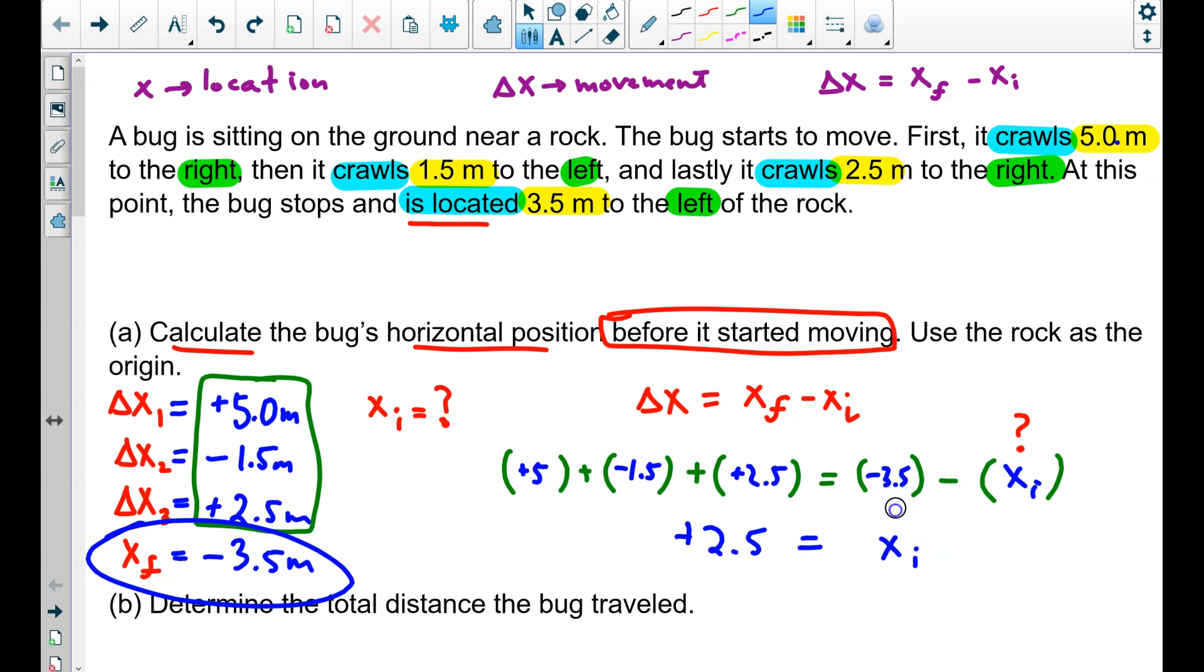Hang on, I made a mistake. Did you make it too? Positive 2.5 is negative x initial. There's a negative sign that I have not yet fixed or taken care of. So, the final answer we get by multiplying. There's one last step. We have to multiply both sides by negative 1 to get rid of the negative on the right side. And now we have the final answer of negative 2.5.